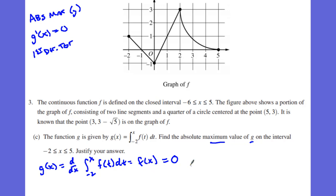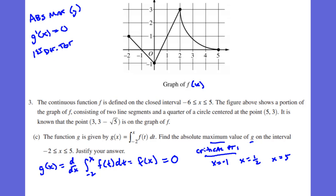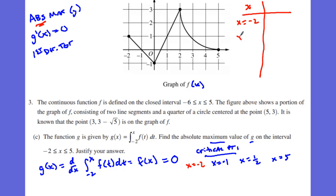So where on my graph is f of x equal to zero? These are my critical points. Critical points are going to be at x equals negative one, x equals one half, and x equals five. Now keep in mind I'm looking for the absolute max, which means I also have to include my endpoints — negative two and positive five. Positive five is already a critical number. So I set up a table with x values: negative two, negative one, one half, and five, and I'm going to evaluate g of x at each.